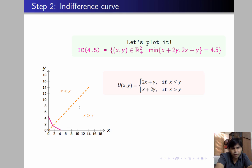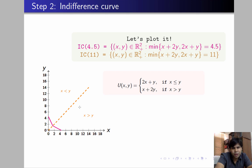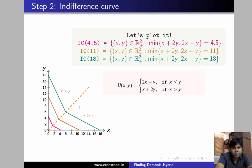Let's plot indifference curves for other satisfaction levels to see in which direction preference increases. For u = 11, the IC shifts outward in the northeast direction with the same shape. For u = 18, the IC shifts further northeast. Satisfaction increases in the northeast direction. The slope of the IC in the x < y region is 2, and in the x > y region is 1/2.